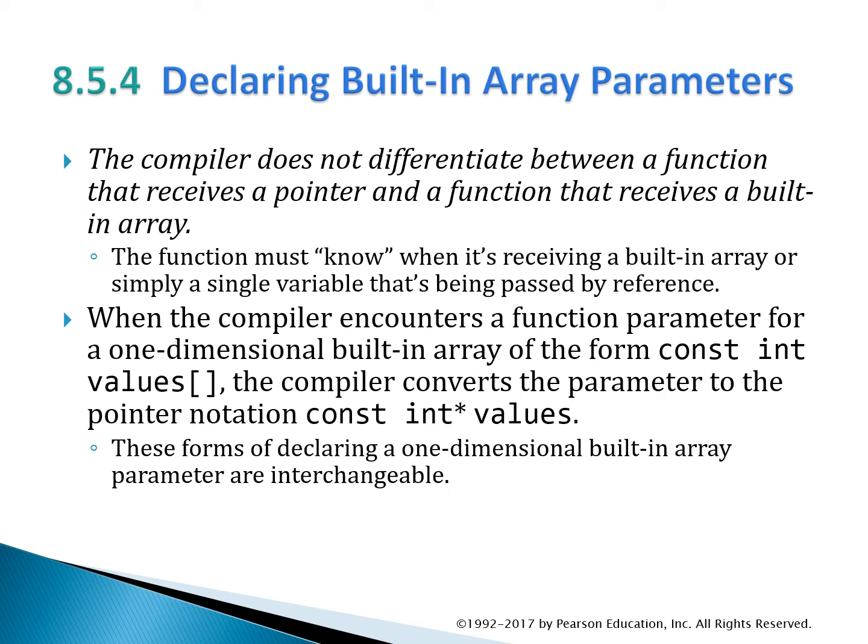Whether it's a pointer or a built-in array, the compiler does not differentiate. There are both ways of getting information. The question is whether the function itself knows how it's getting information — whether it's a single variable or all the values in the array. What happens under the hood is that when the compiler sees const values with square brackets, it converts it to a pointer, even though that's not how we wrote it, to make it easier to point to the different values in memory.